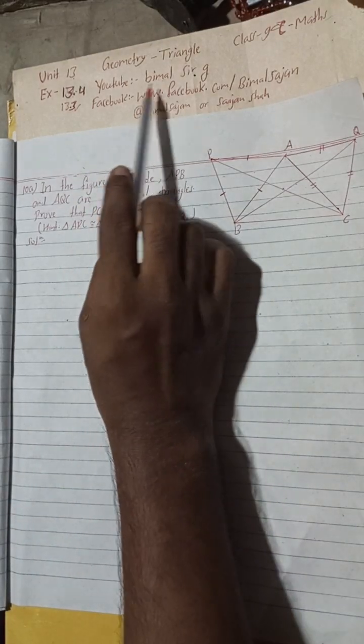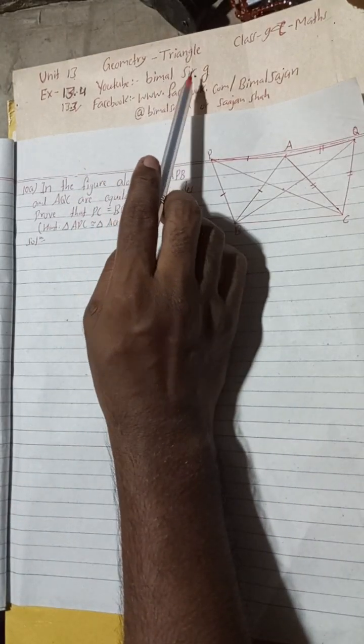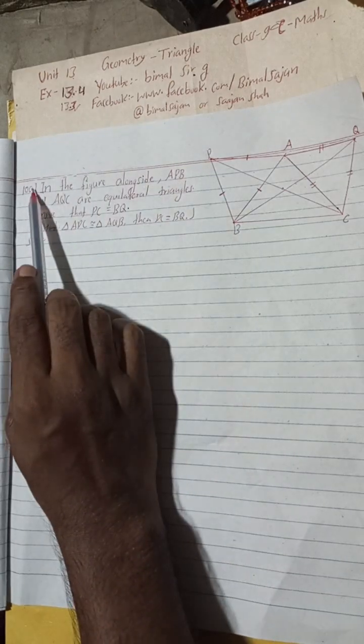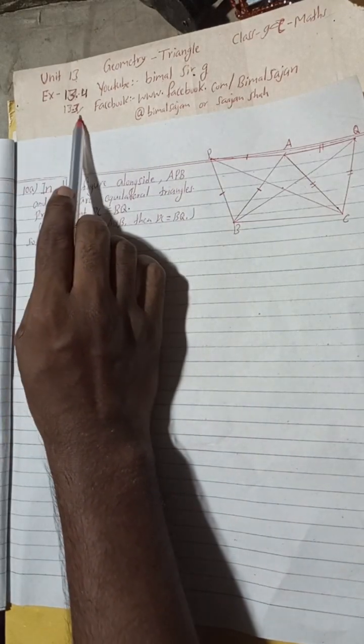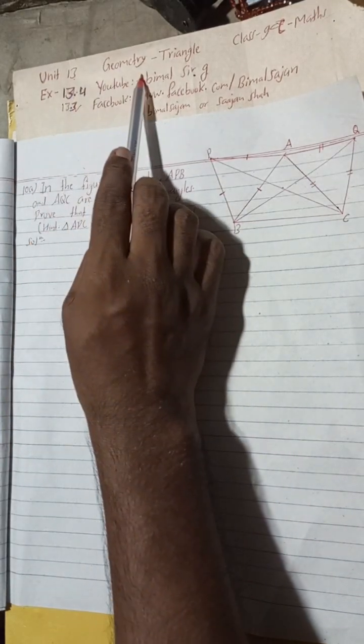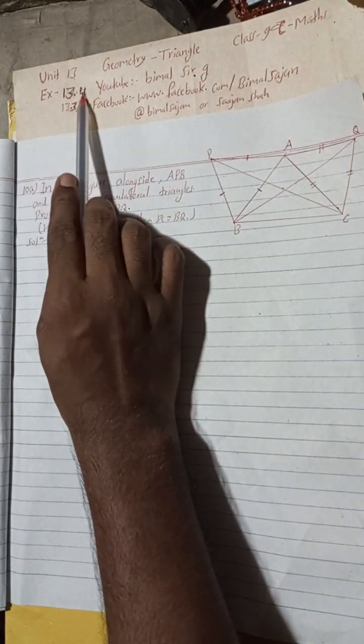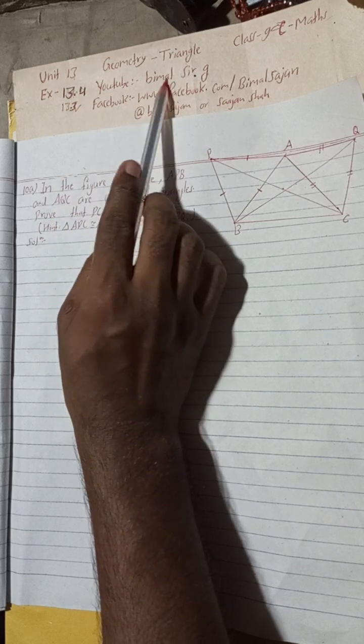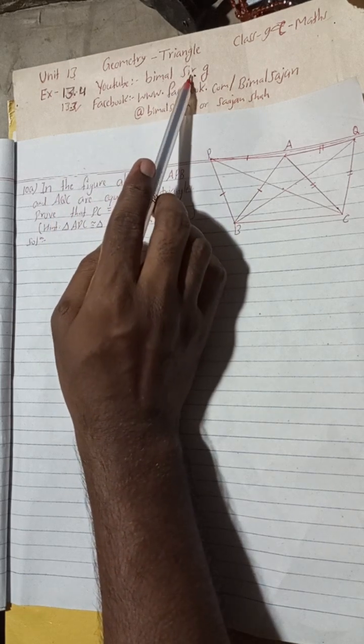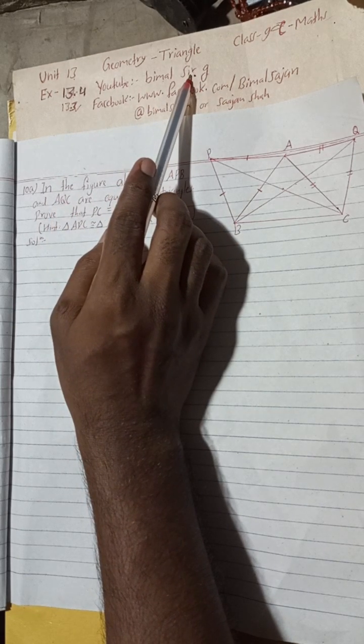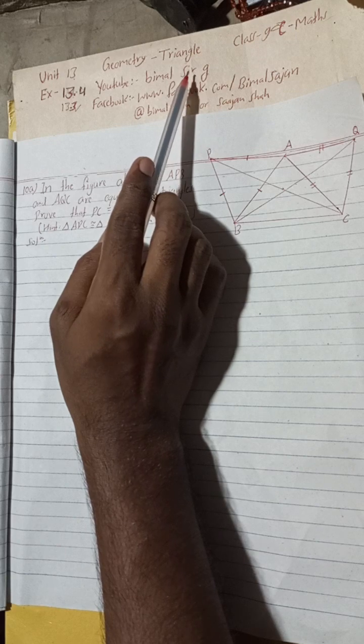Hi class 9 and 10 students, welcome back to Vimal Sarji YouTube channel. This is question number 10a, exercise 13.3, unit 13 geometry - triangle, class 9 compulsory maths. Exercise 13.4 is already uploaded. You can check the playlist to find solutions of class 9 and 10 OPT maths, compulsory maths and science.